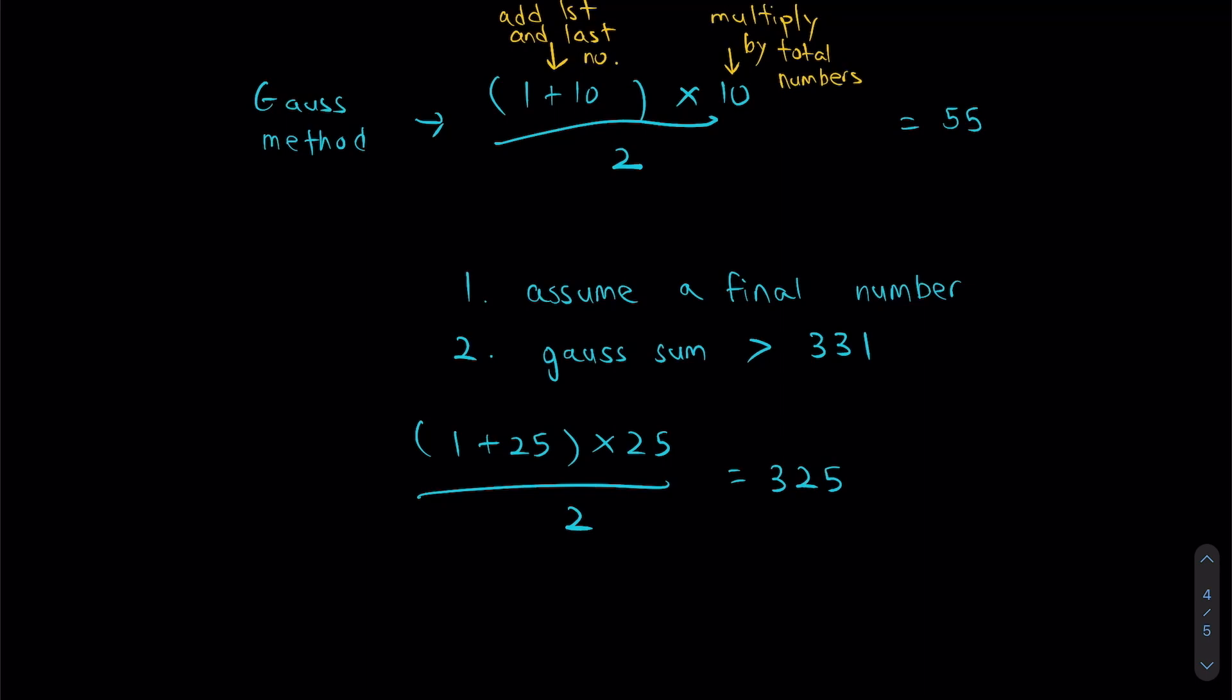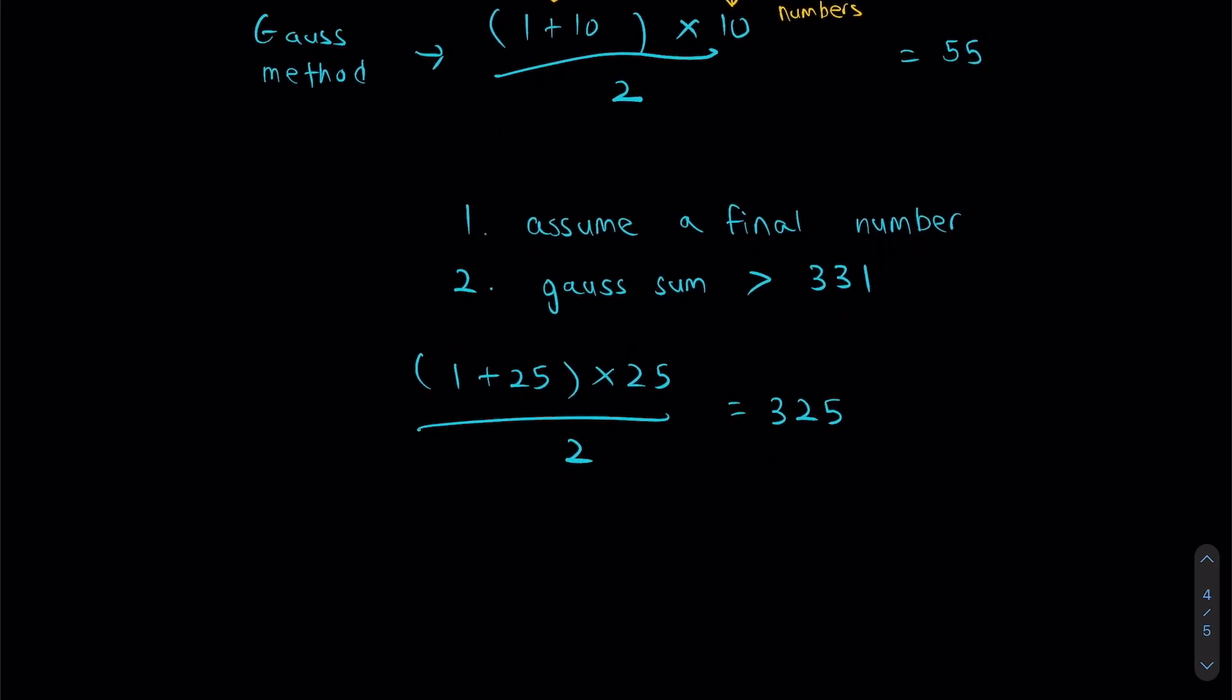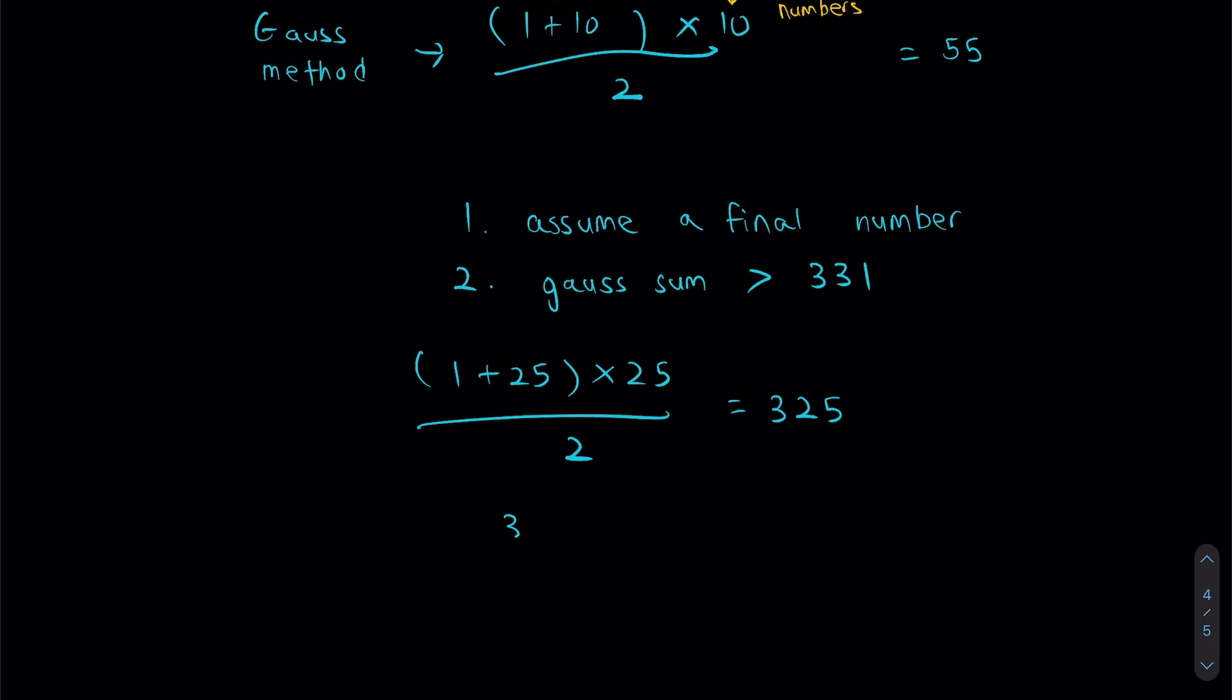It's not big enough, right? Because we've already mentioned that the Gauss sum has to be more than 331. However, 325 is really close to the number we're looking for. Which means if I took 325 plus one more number, which is 26—that's the number after 25—I get 351. This right here would meet both my criteria. Which means I can safely say that my final number is 26. This right here is my final number.